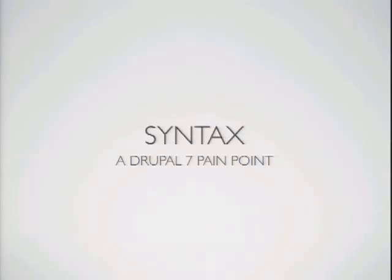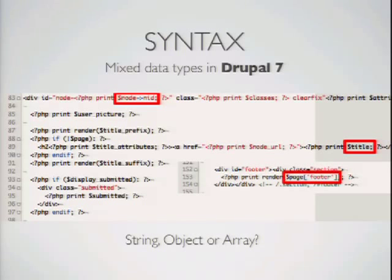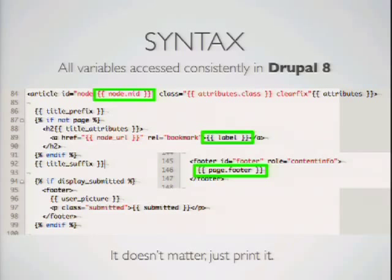There are a couple of problems with the syntax in Drupal 7. When you are printing variables in your template files, there are lots of different ways to identify your variables. If you're printing an object, you print things with an arrow. If you're printing something in an array, you use square brackets. For people who are experts in HTML and CSS, they shouldn't need to know the difference between an object or an array, or which things Drupal decided to make which.